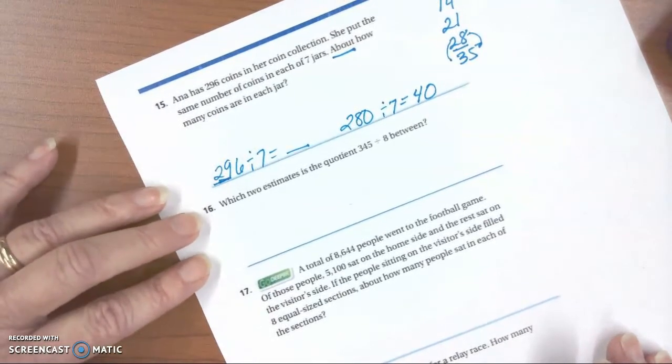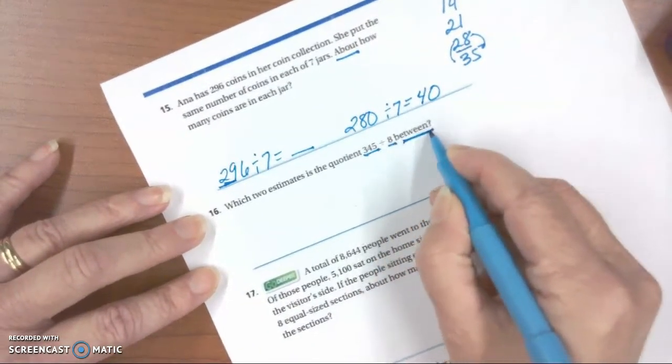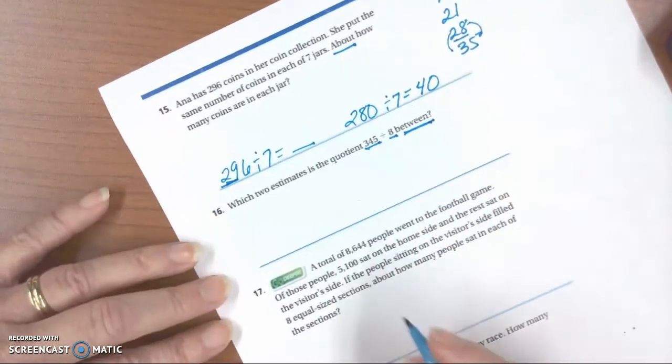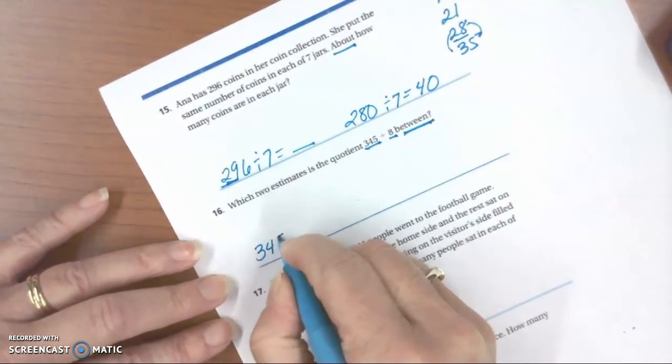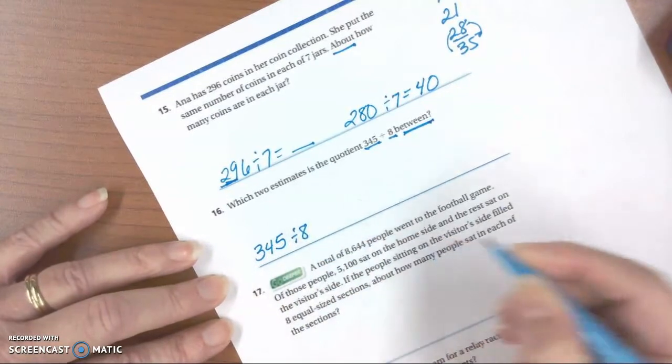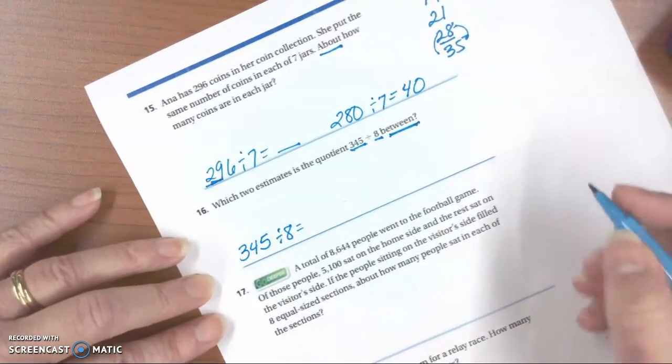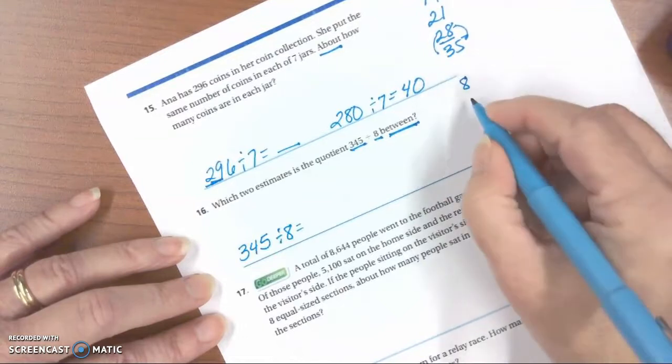which two estimates is the quotient 345 divided by 8 between? So this time we actually are looking for 2. So 345 divided by 8. And we're looking for which two is it between. If I count by 8s, using the multiples strategy,